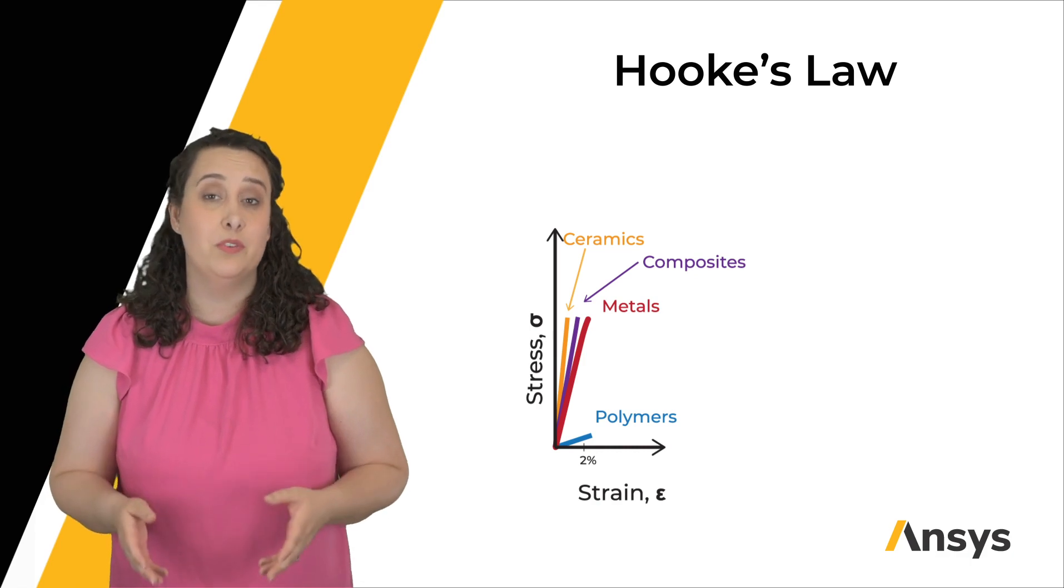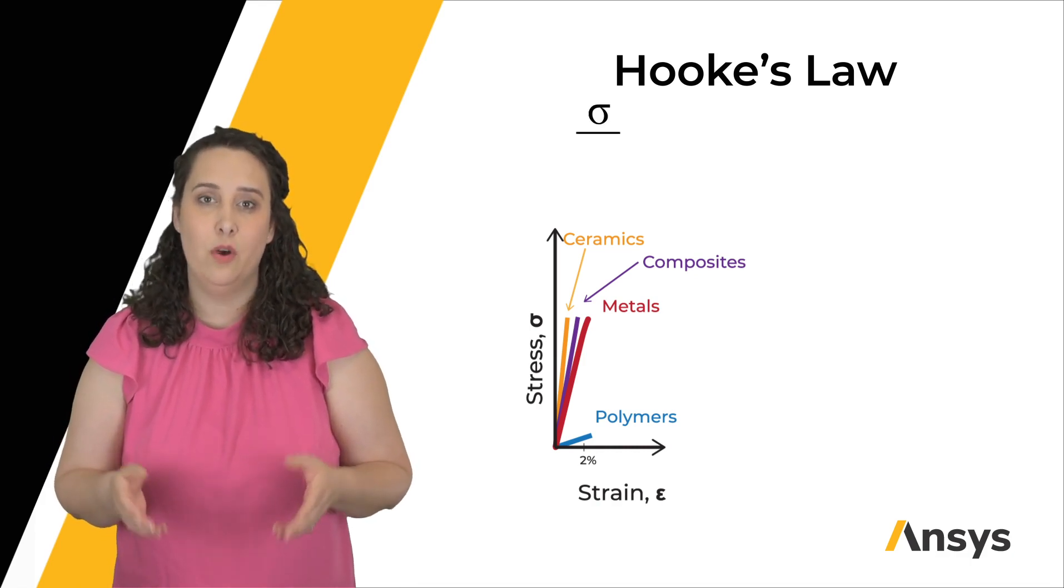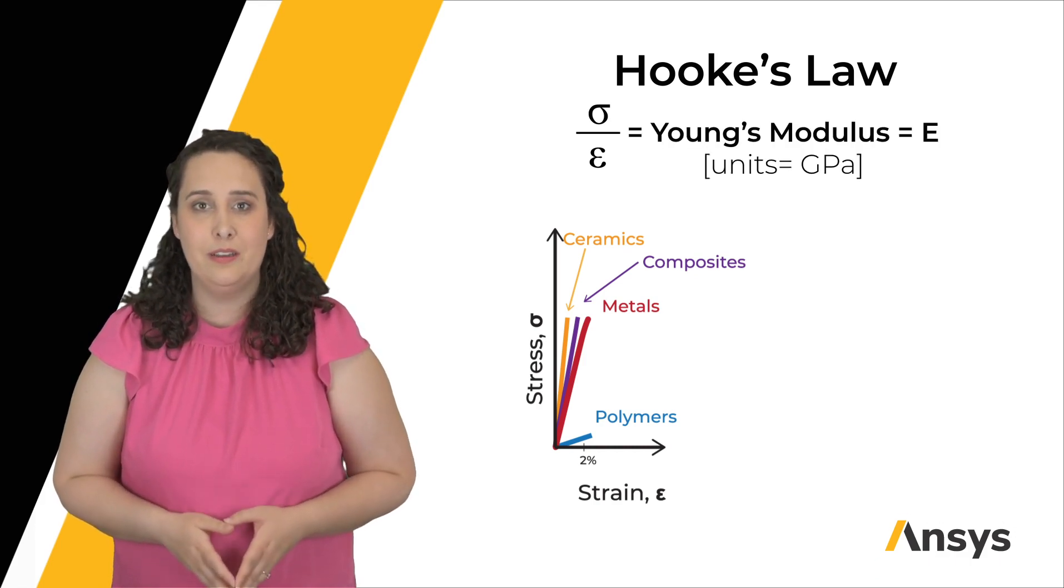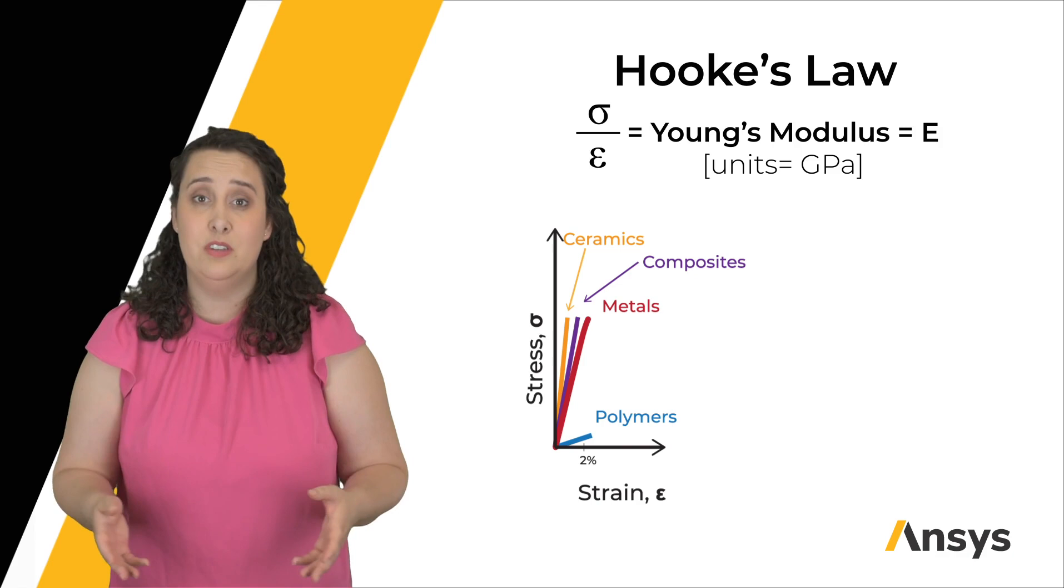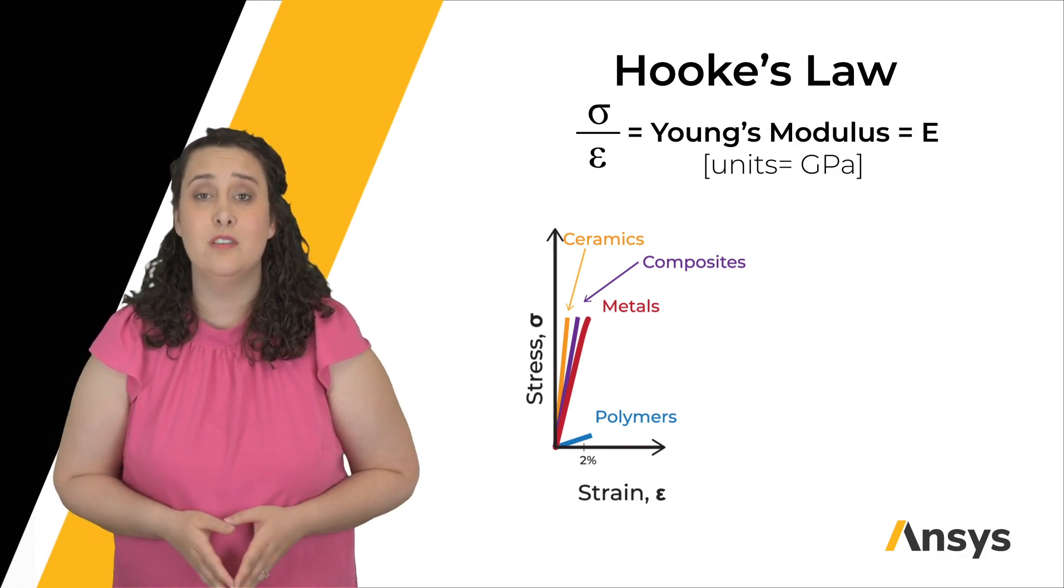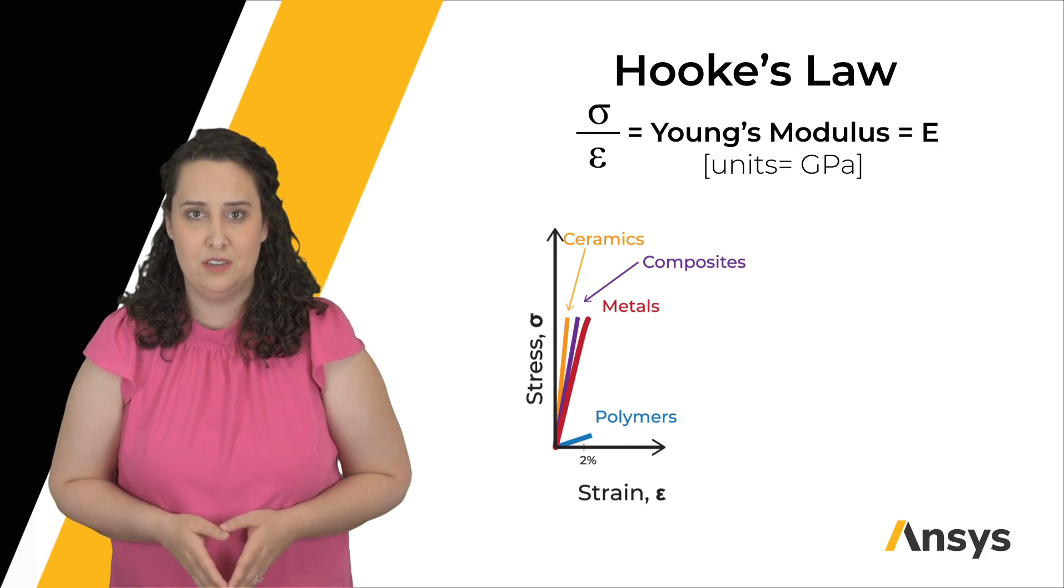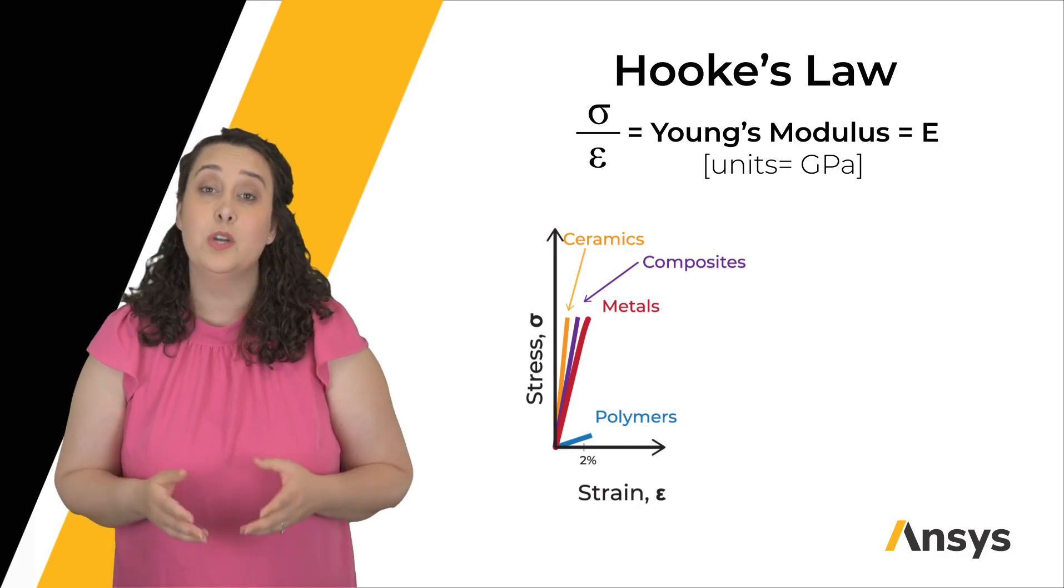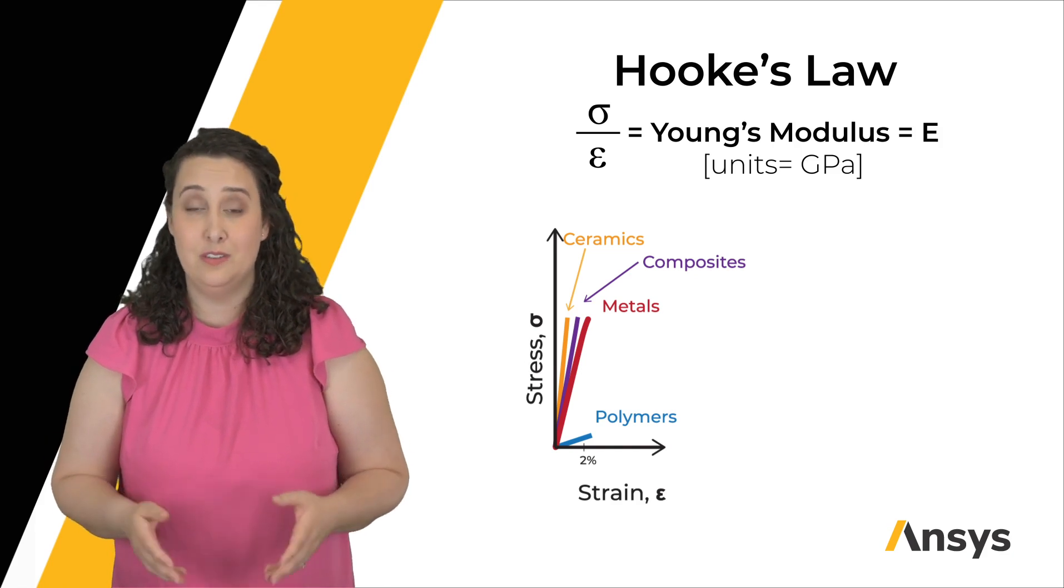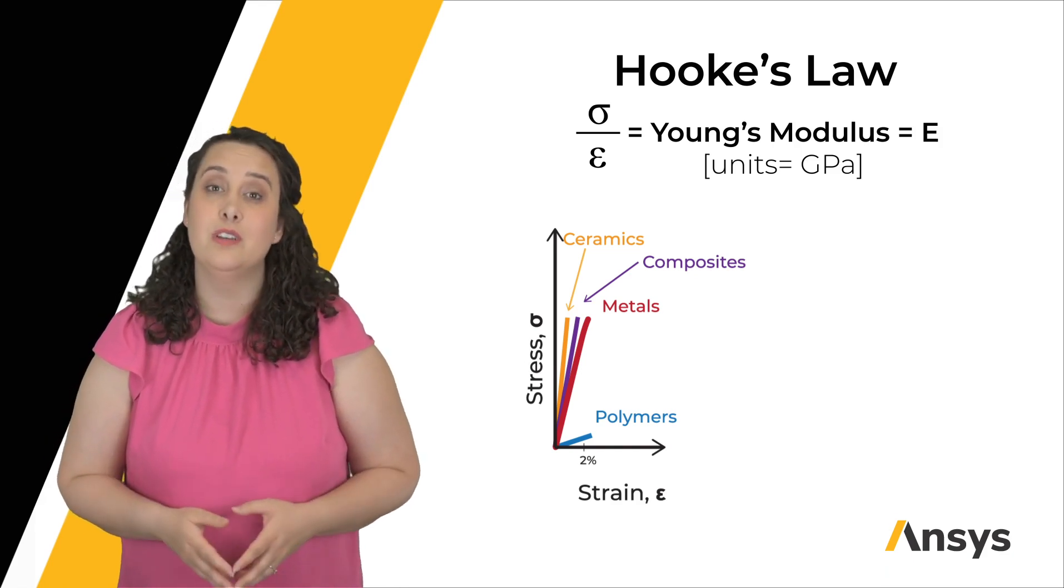Hooke's Law can be represented mathematically as stress over strain. This is equal to Young's modulus, or E. If I'm thinking about stiffness in terms of designing a product, Young's modulus is a material property that I'll want to consider. This equation for Hooke's Law, as well as our equations for stress and strain, can also be used in simple calculations.